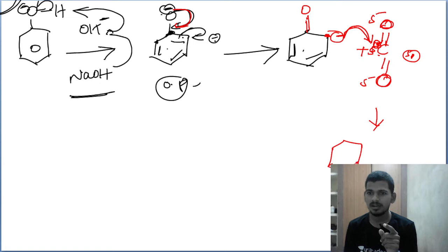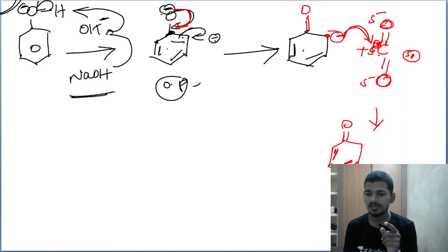So this gives a negative charge. There is a C double bond O, and O minus. The carbon of CO2 carries a partial positive charge due to the electronegative oxygen atoms on either side.